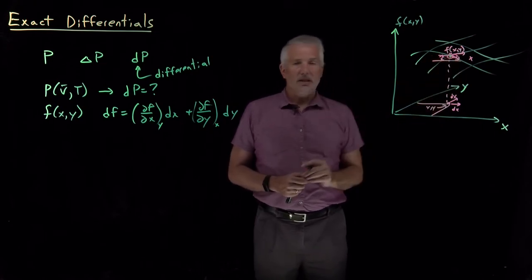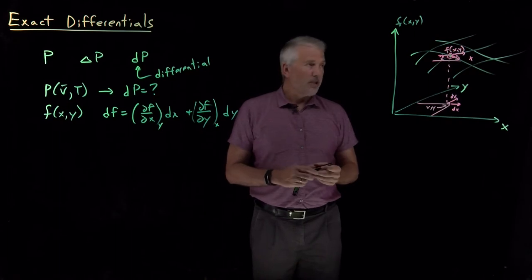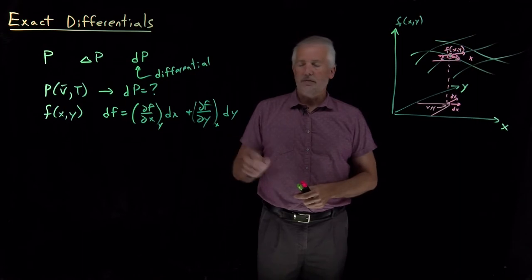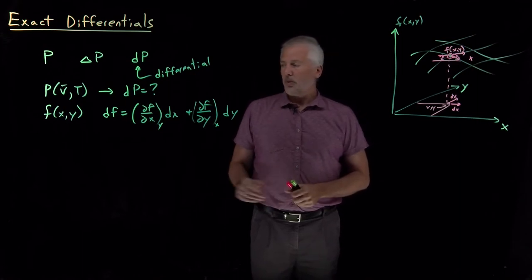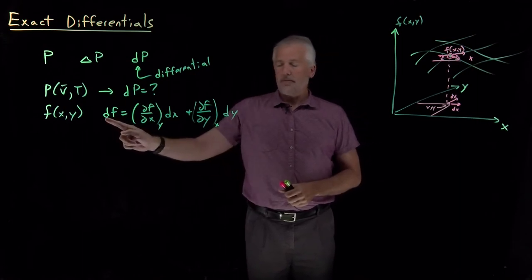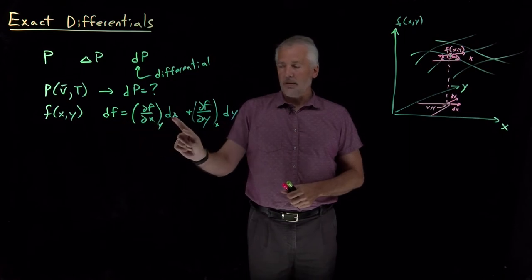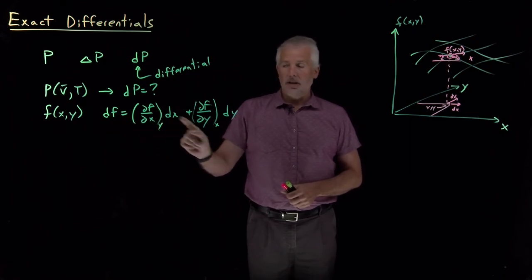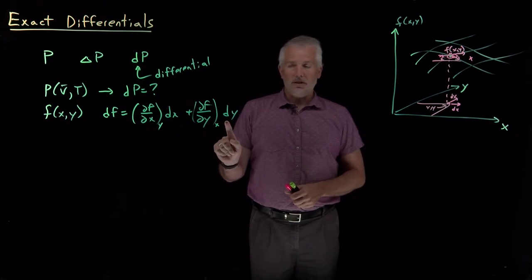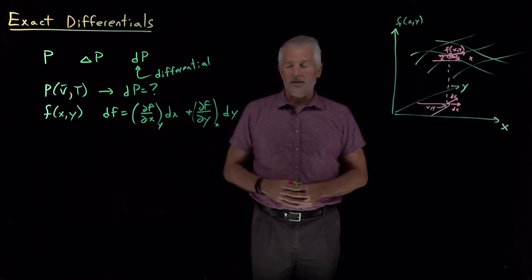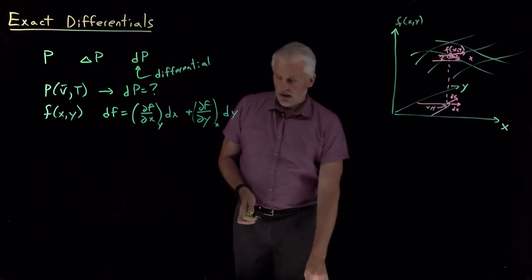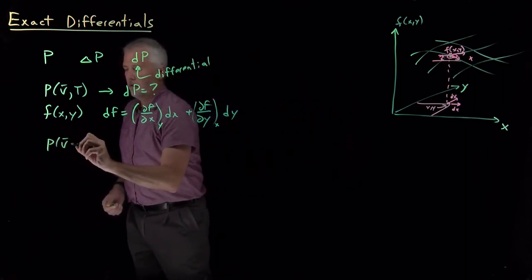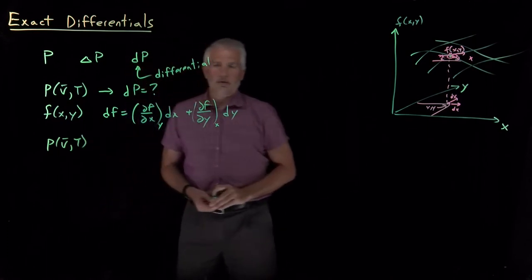If we move from the initial point to some other point where both x and y are changing, then the change in the function is due to some change in x and some change in y. We have to think about these as infinitesimally small differential-sized quantities, because then — when making very small steps — we can add the change in x and the change in y together to get the total change in f.